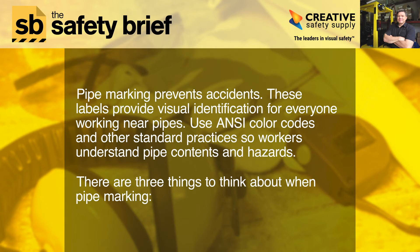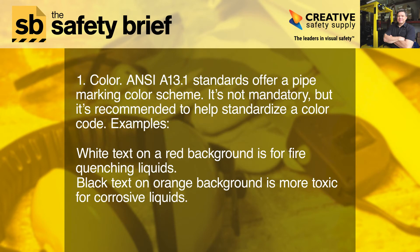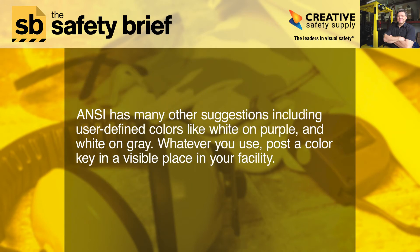There are three things to think about when pipe marking. One: color. ANSI A13.1 standards offer a pipe marking color scheme — it's not mandatory but it's recommended to help standardize a color code. Examples: white text on a red background is for fire-quenching liquids; black text on an orange background is for toxic or corrosive liquids. ANSI has many other suggestions, including user-defined colors like white on purple and white on gray.